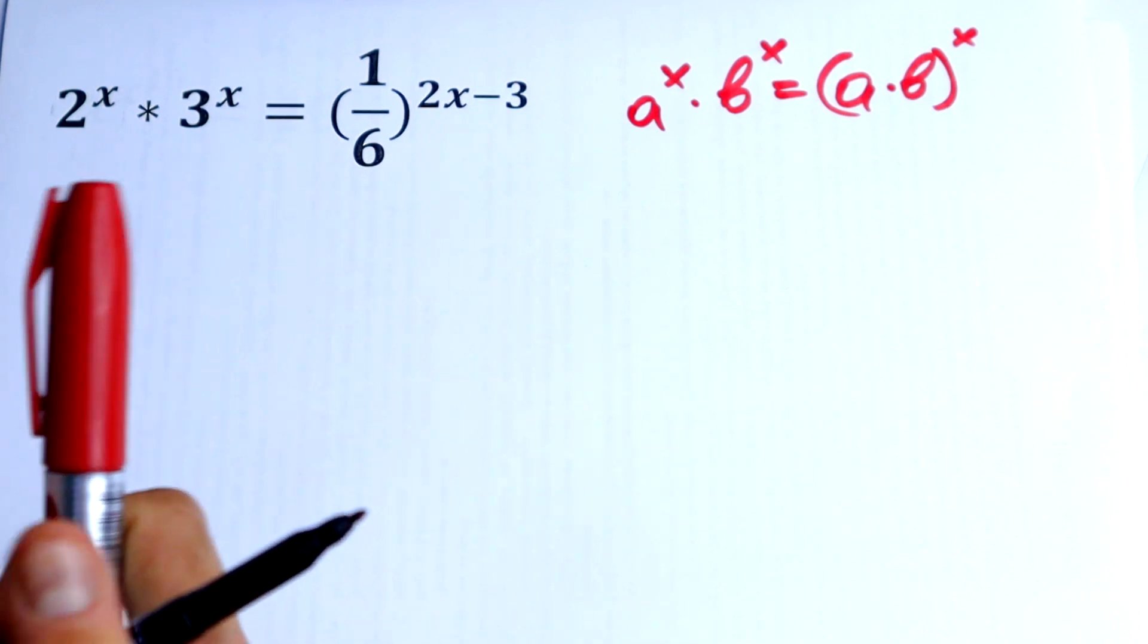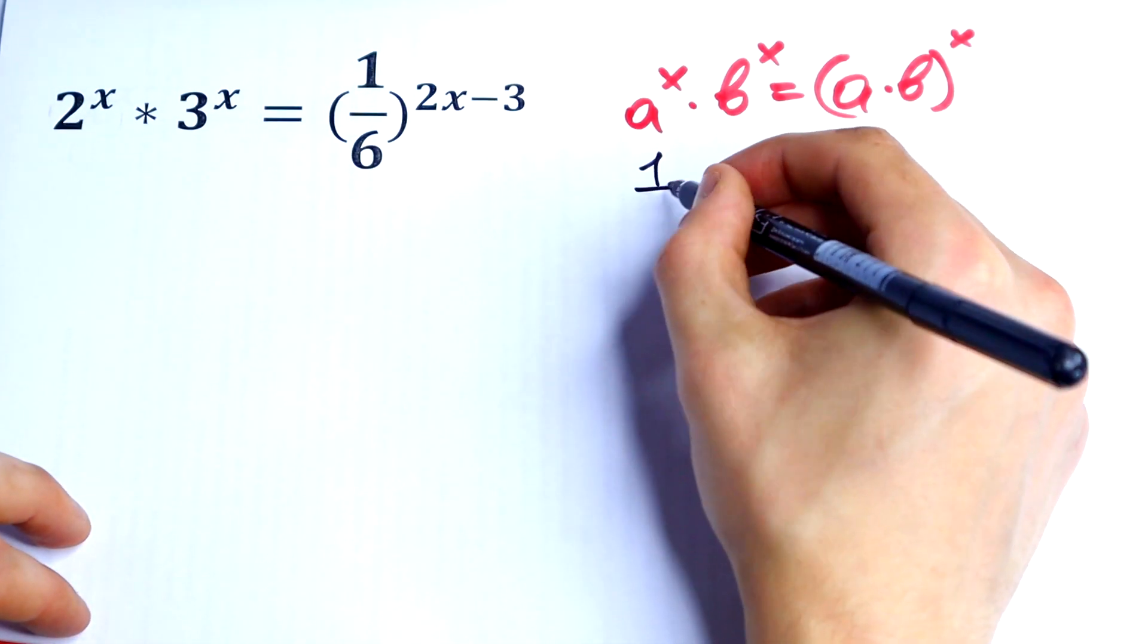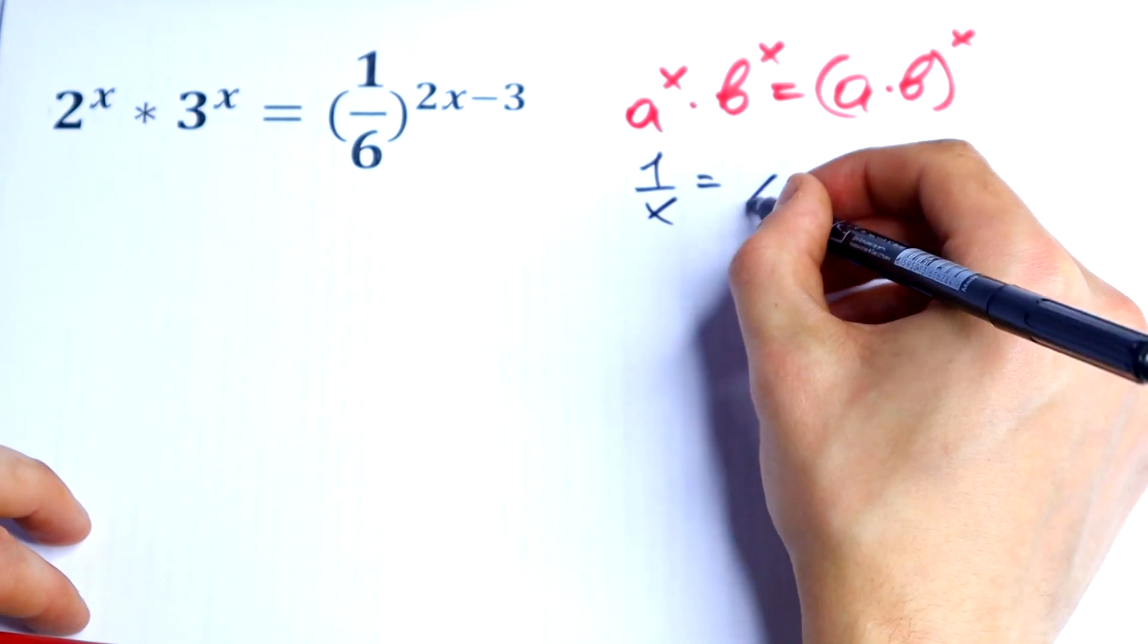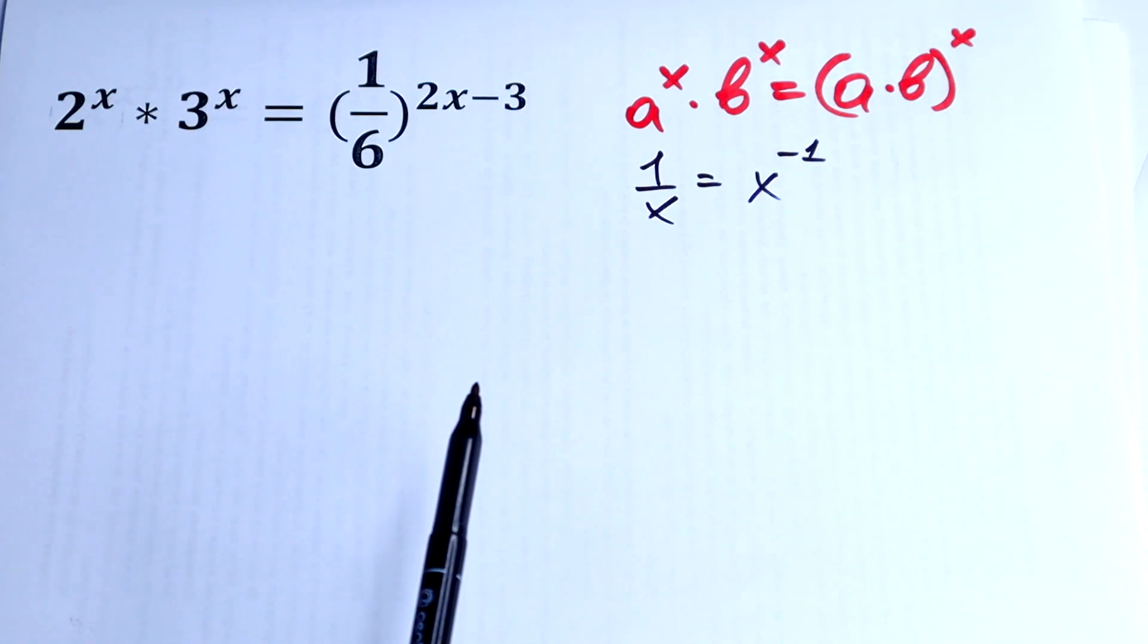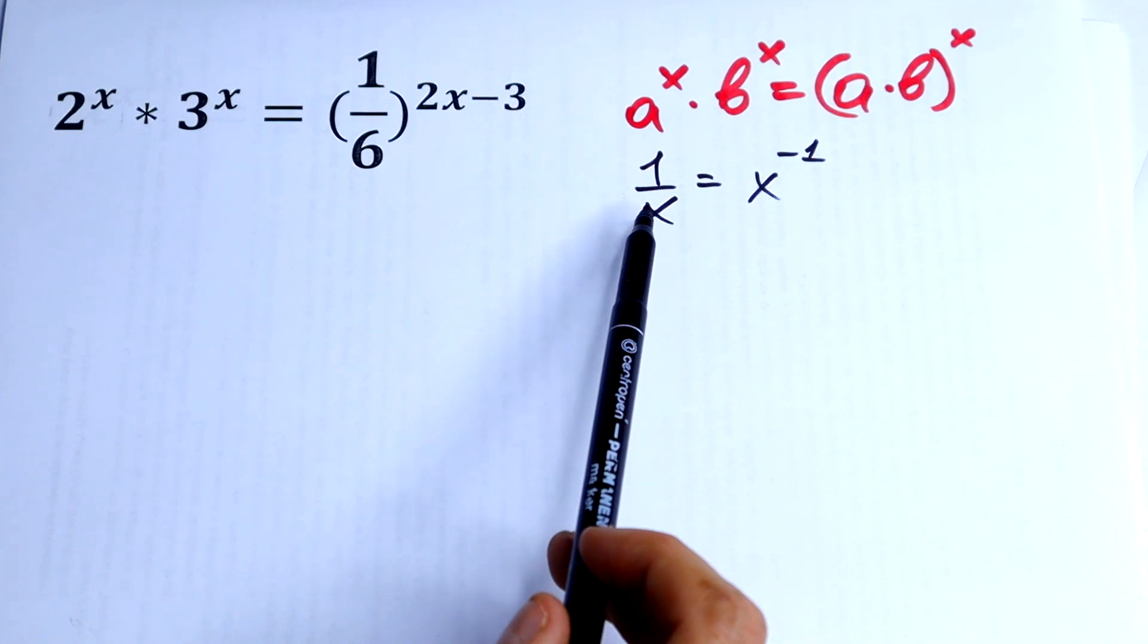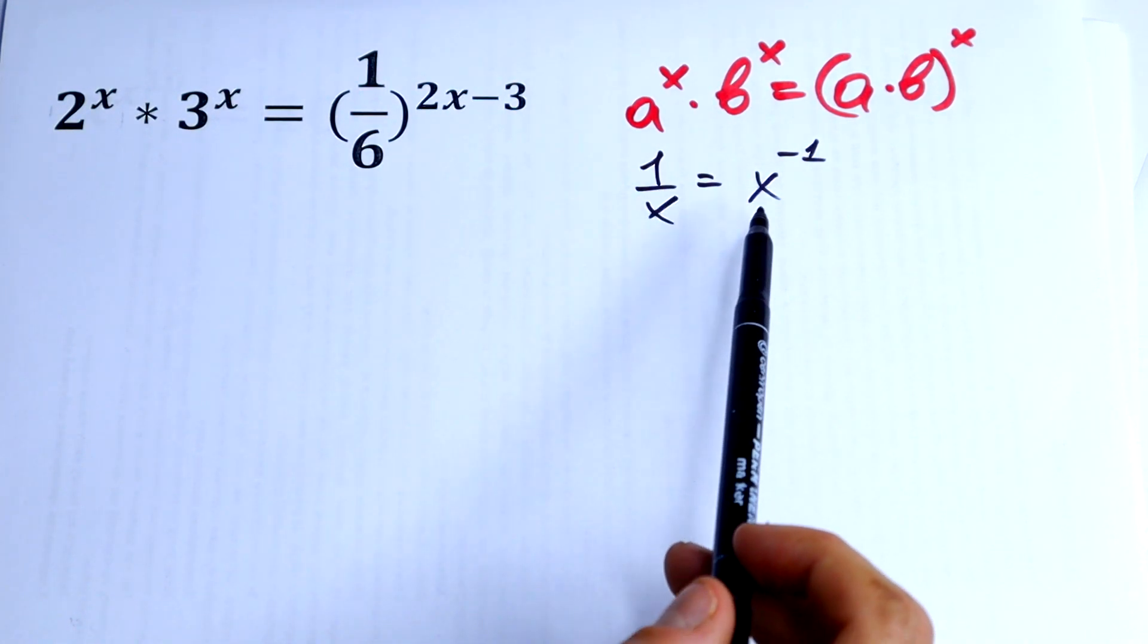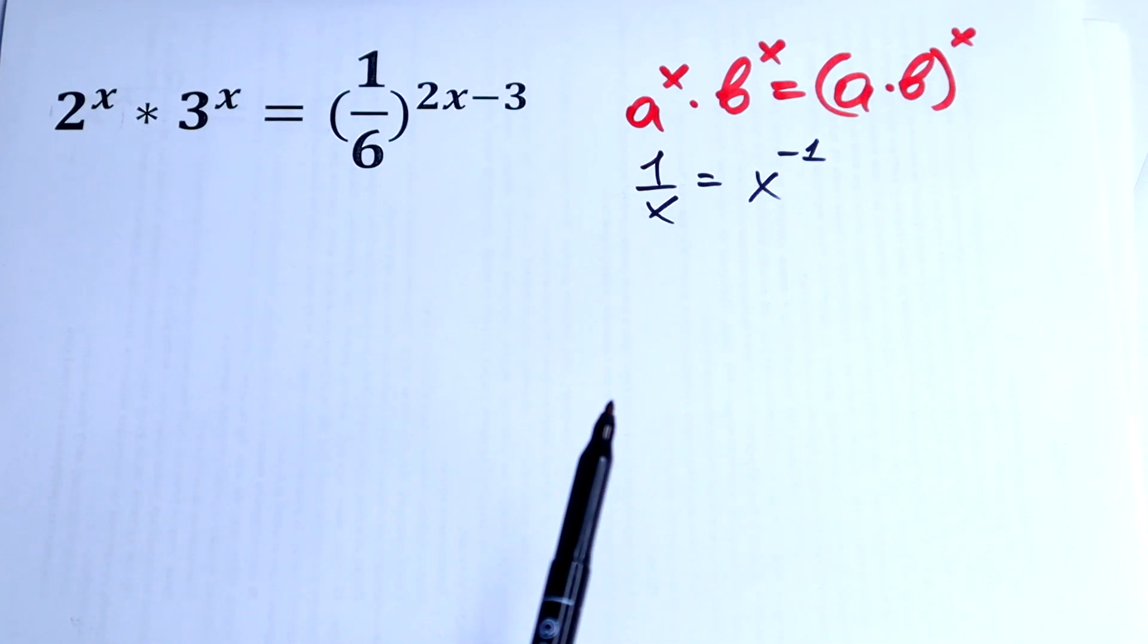The next rule: when we have 1 over x, it equals x^(-1). This is a really cool rule you should know. When we have x in the denominator and want to move it, we just write a minus in our exponent.